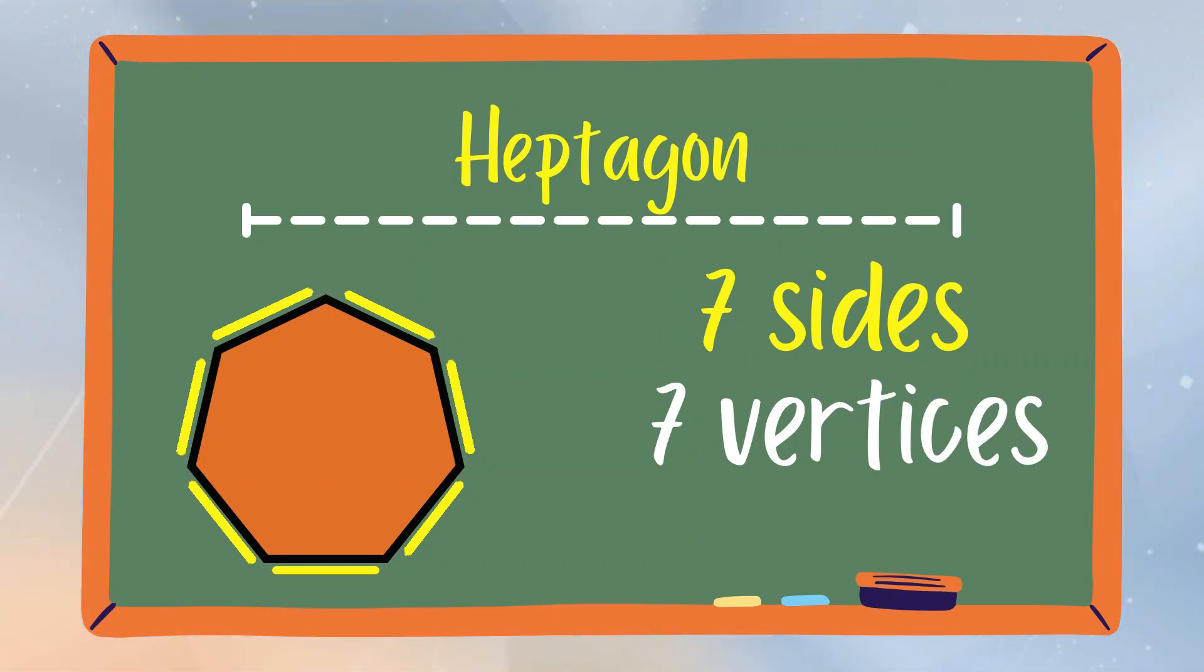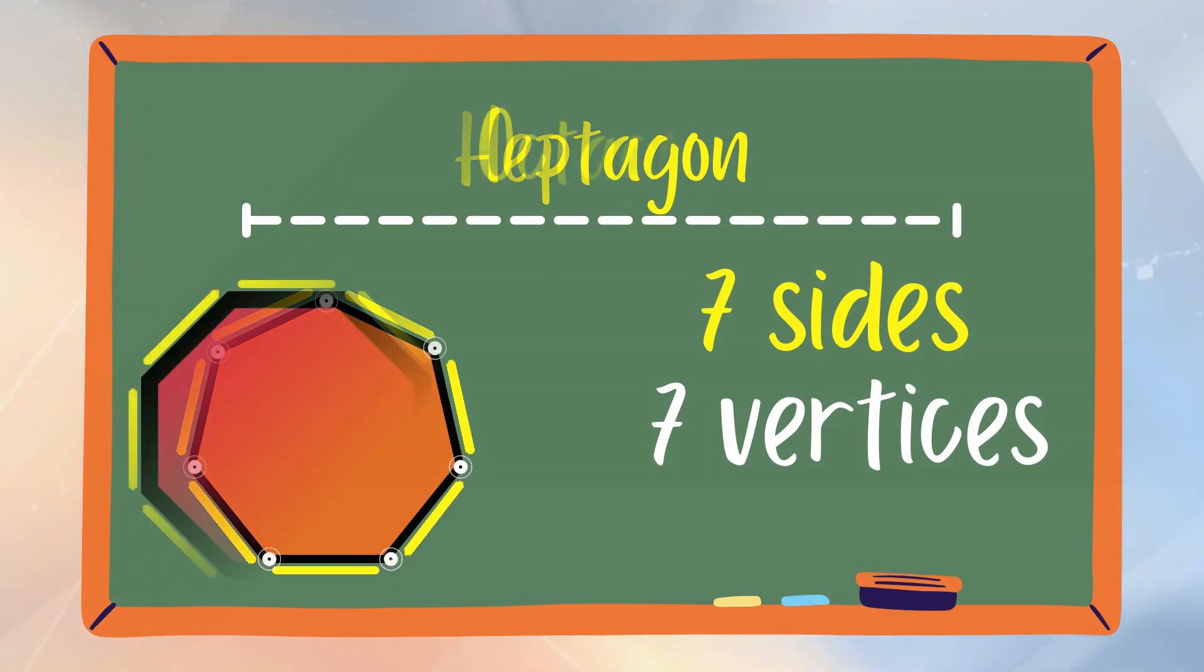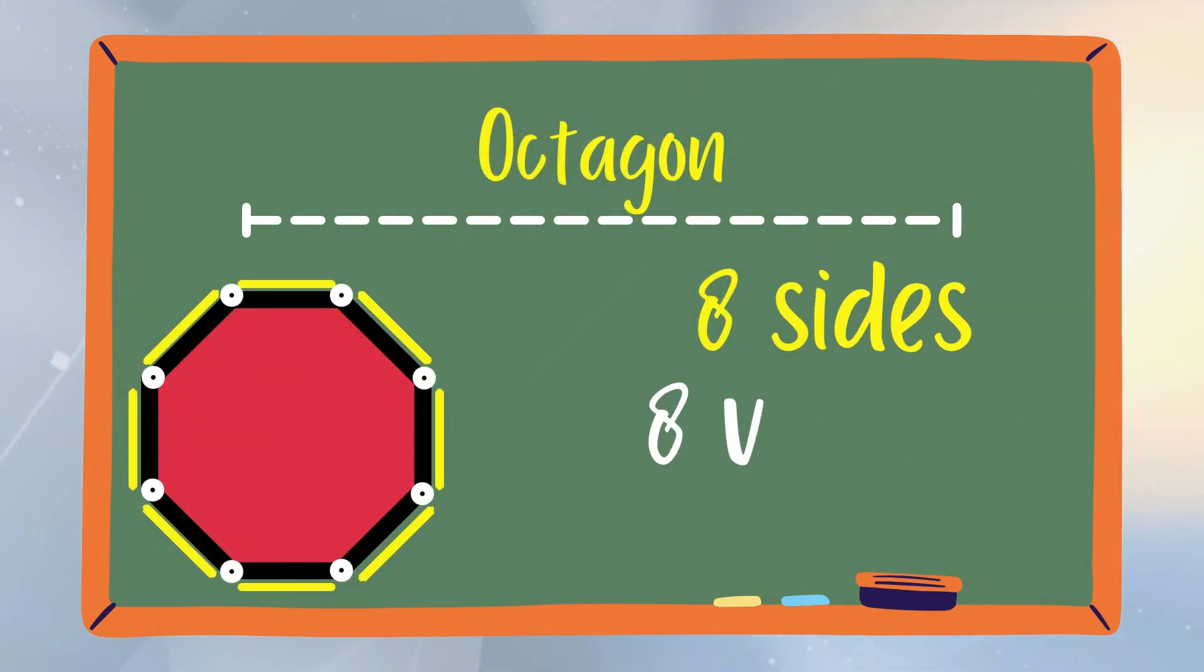Heptagon is a polygon that has seven sides and seven vertices. Octagon is a polygon that has eight sides and eight vertices.